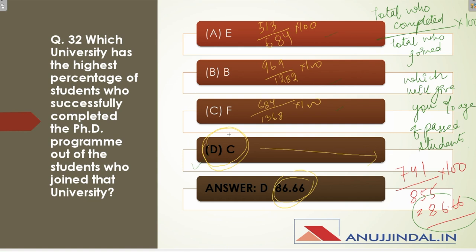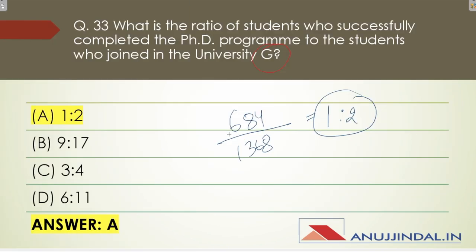Question 33 asks: what is the ratio of students who successfully completed the PhD program to the students who joined university G? For this, you go directly to university G's values in the table and compute the ratio straightforwardly.